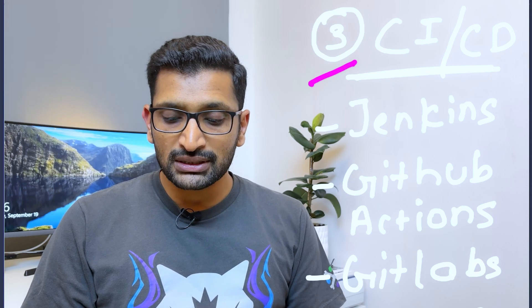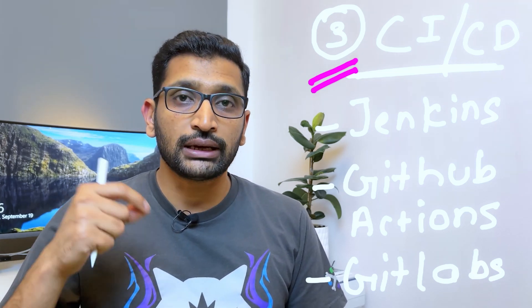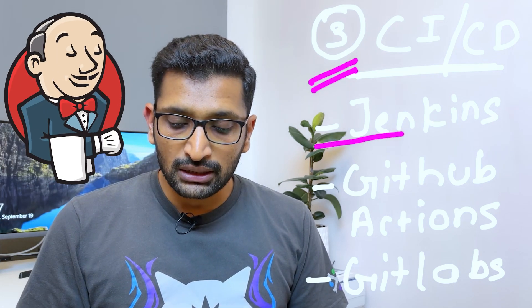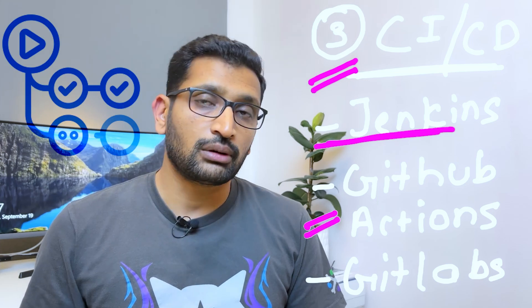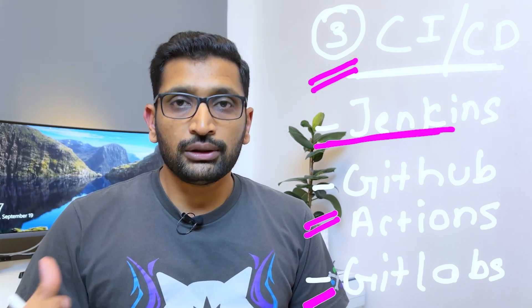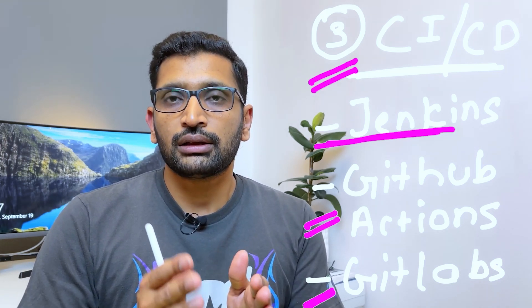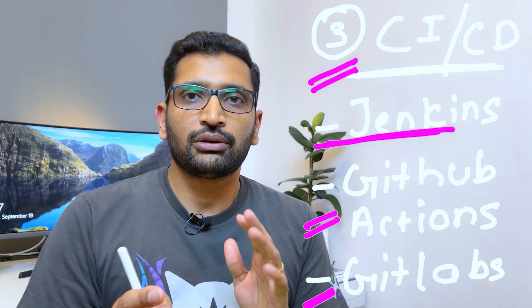Third on the list is CI/CD, which stands for Continuous Integration and Continuous Delivery. Writing code is not sufficient — you need to continuously integrate and deliver your code to the production environment. Popular tools for this include Jenkins, which is an open-source tool widely used in the industry for a long time. There are also GitHub Actions, GitLab, and ArgoCD, among other tools in the market. Without a CI/CD tool, your automation and continuous delivery will not be as fast or efficient.